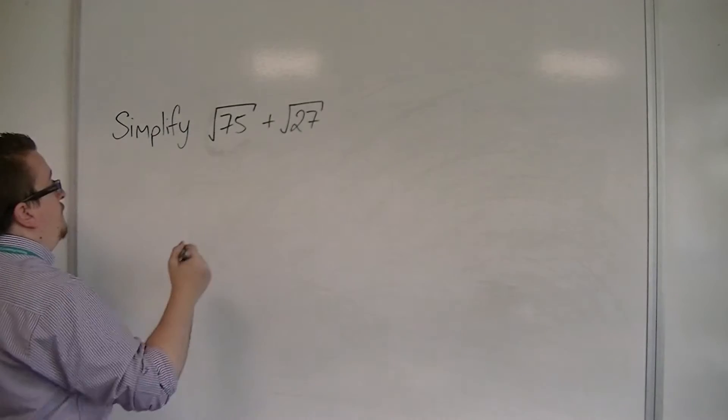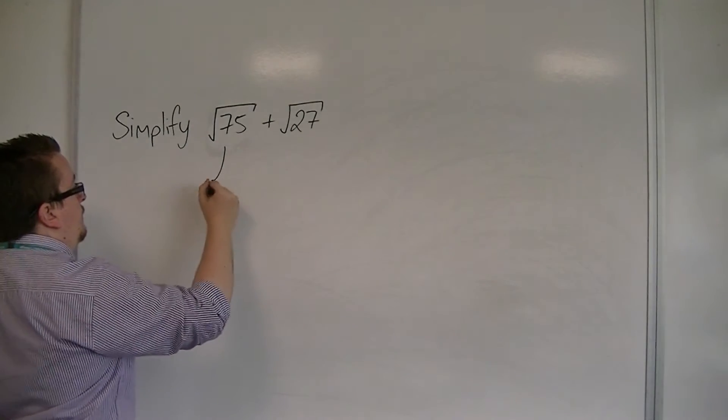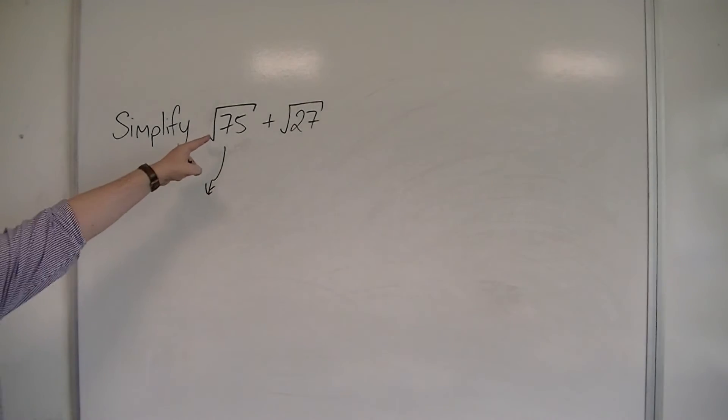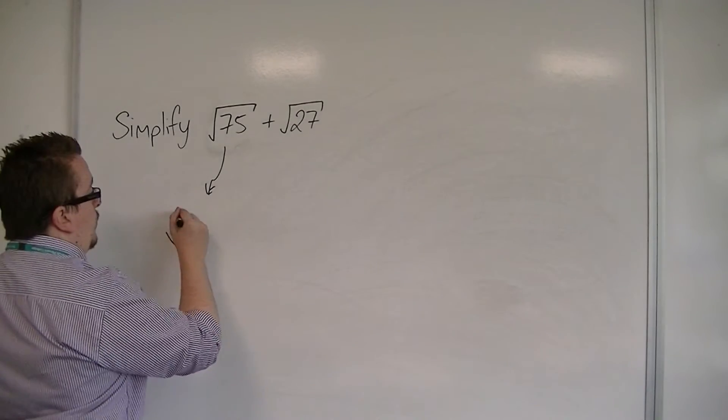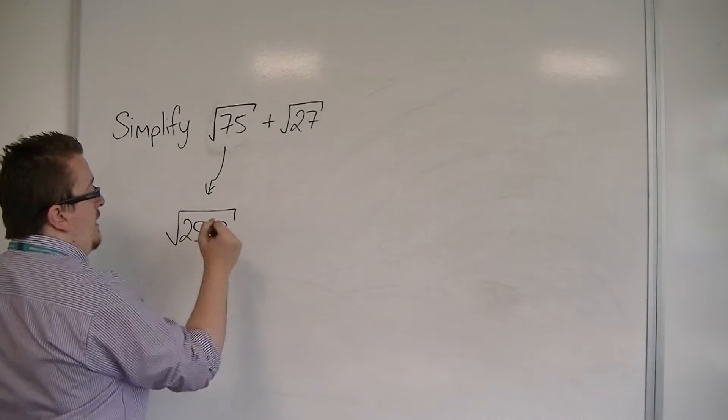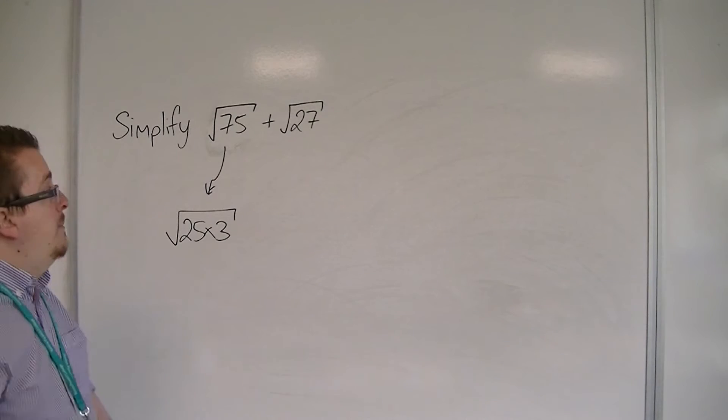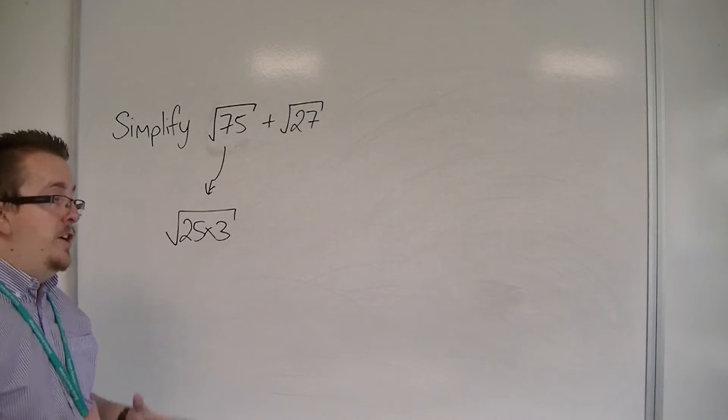Root 75, that's the first thing that we're going to do. Square root 75 I know is the square root of 25 times 3. I've picked out the square number that I know is a factor of 75, which is 25.